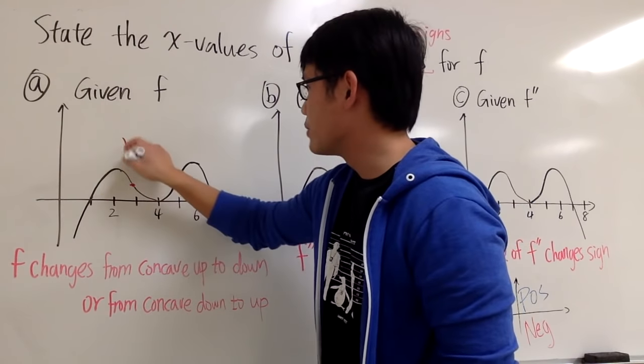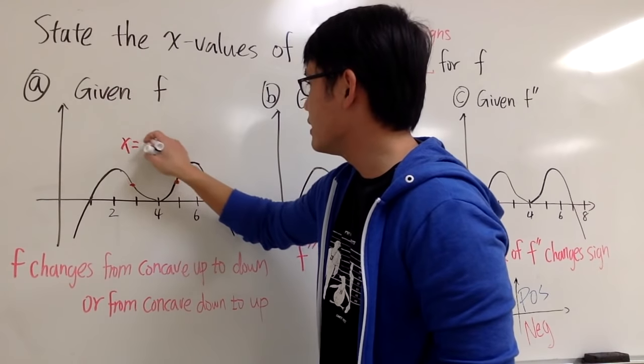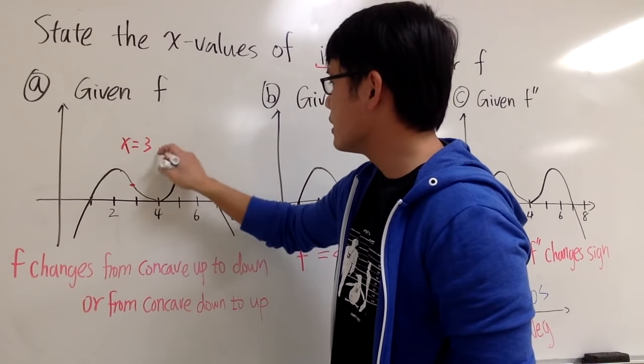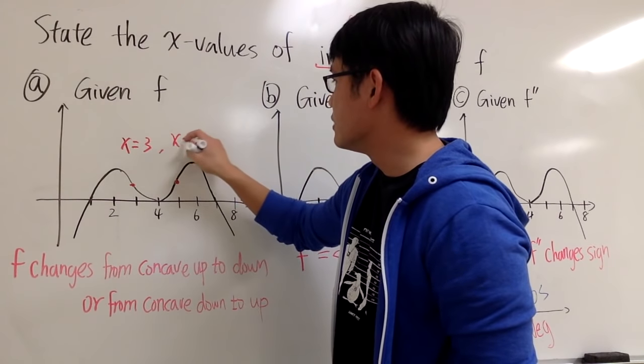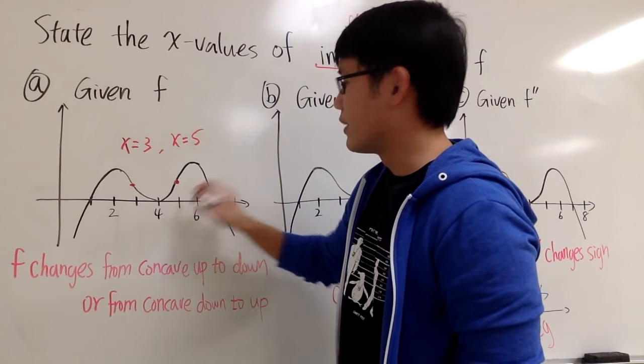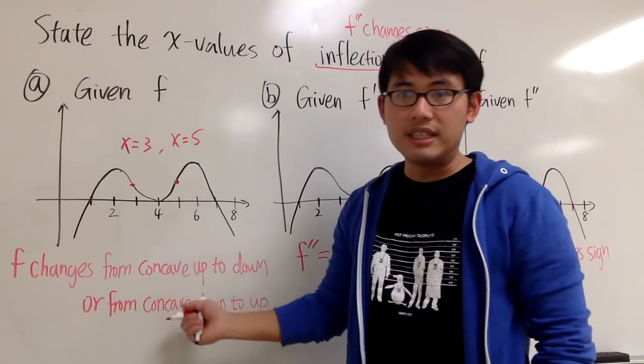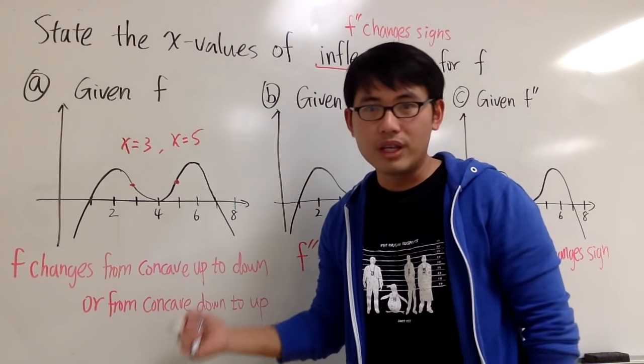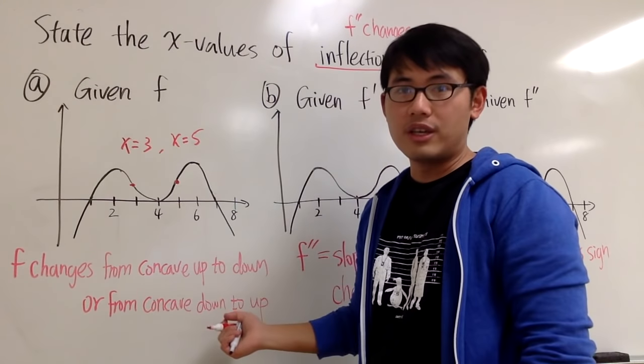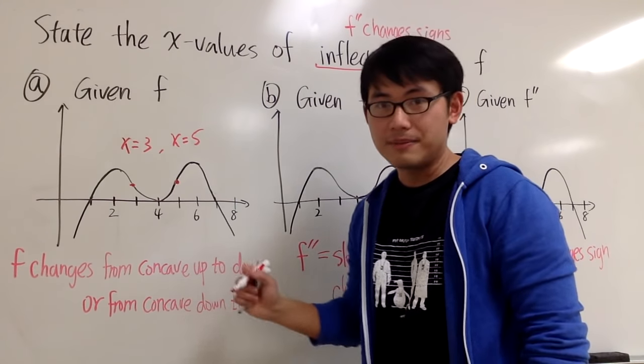So the answer for Situation 1: x is equal to 3 for this point, and x is equal to 5 for this point. This is the easy one when you are given the original function f.